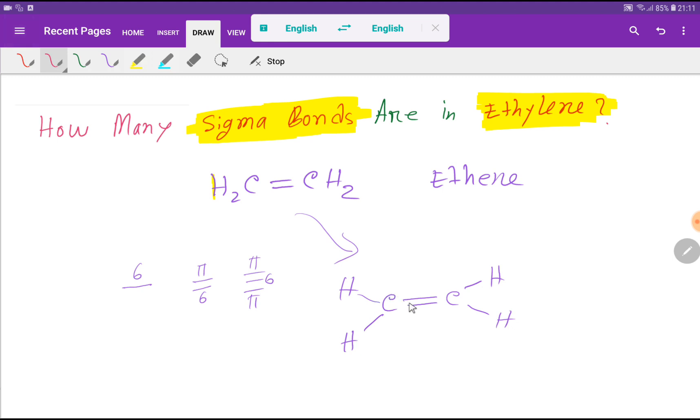Between these carbons is a double bond, so one sigma bond and one pi bond. This is a single bond, so sigma bond. Single bond, sigma bond. Single bond, sigma bond. Single bond, sigma bond.